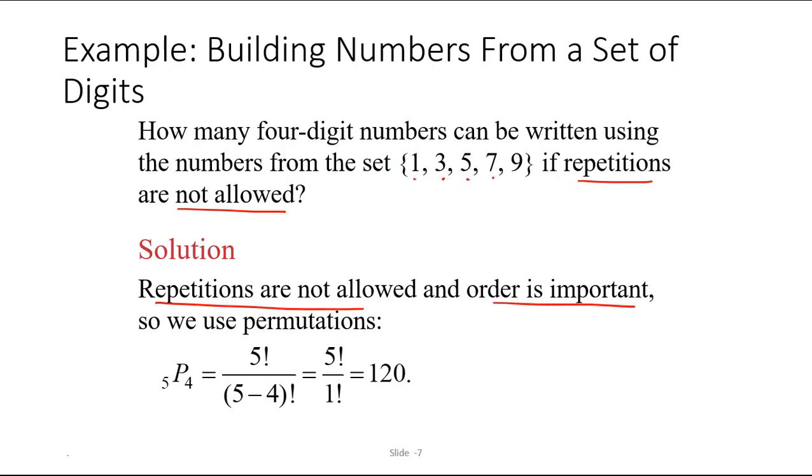We have 1, 2, 3, 4, 5 digits to select from, and we're creating 4-digit numbers. So we are going to, from the 5 objects, select 4. This can be calculated as 5 factorial divided by 5 minus 4 factorial, or 5 factorial divided by 1, which is 120. So there are 120 four-digit numbers that can be written using digits from this set.